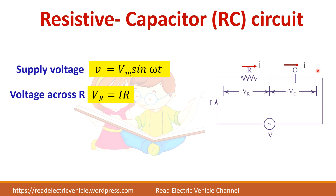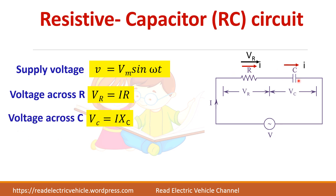I have taken I as the reference. The voltage across the resistor will be in phase with the current because it is a resistor. The voltage across the capacitor will be lagging behind the current by 90 degrees, and Vc is equal to I times Xc, where Xc is equal to 1 by omega C.